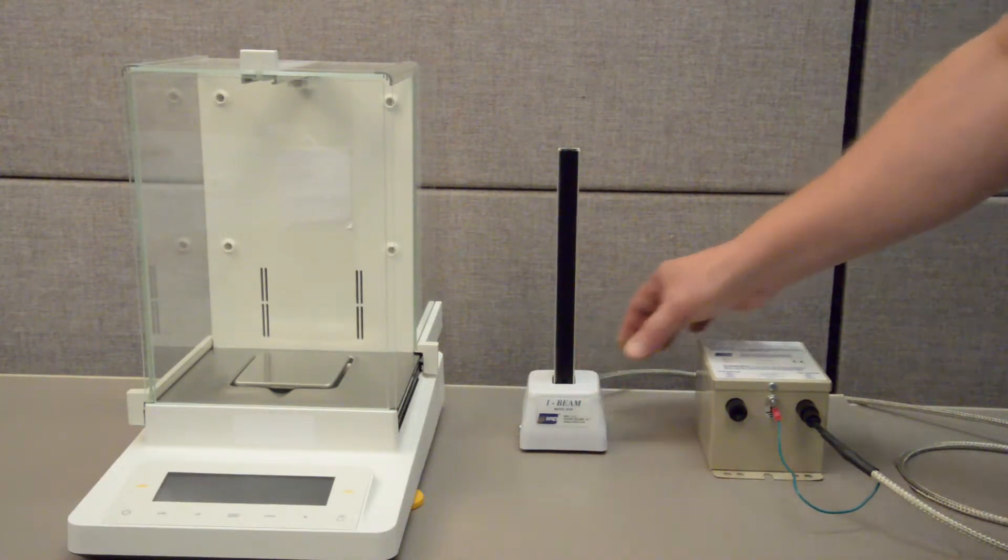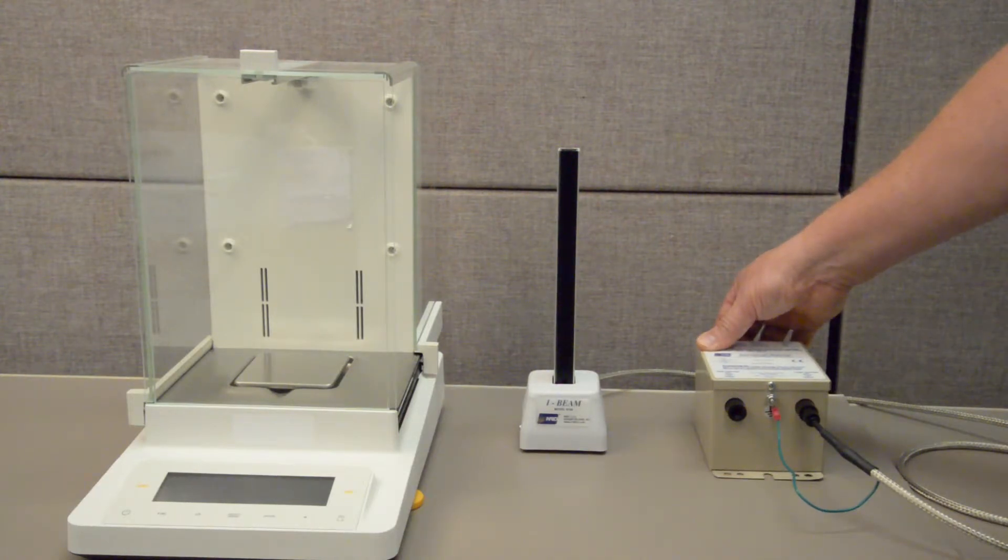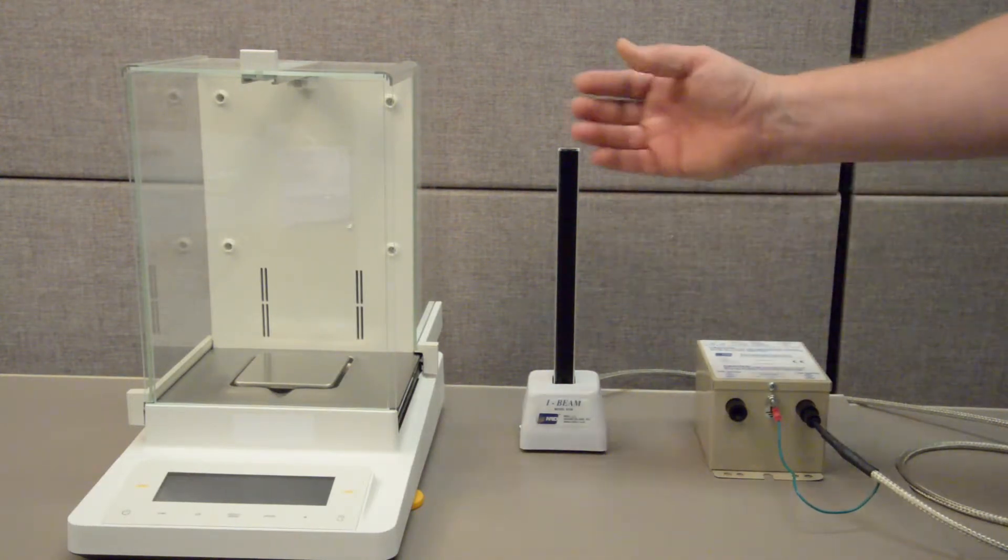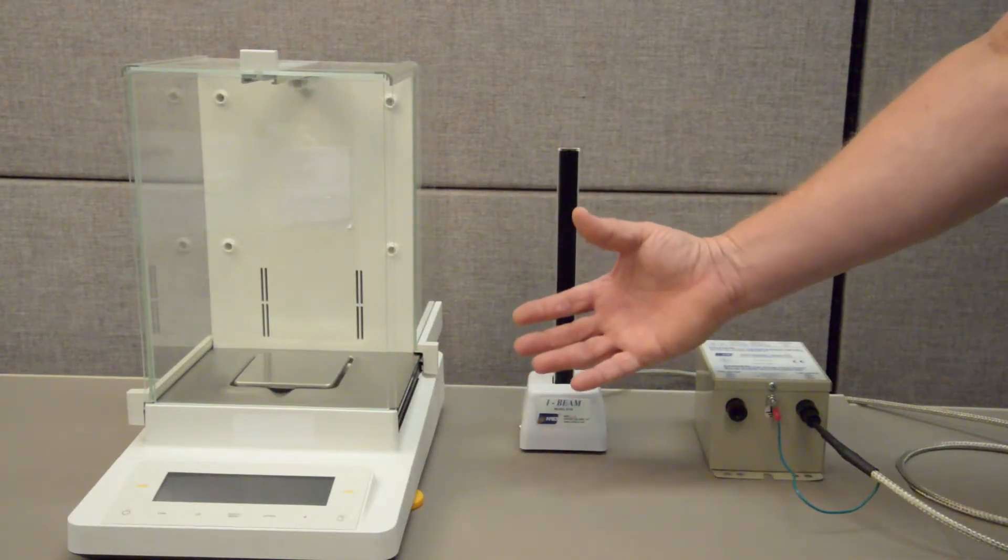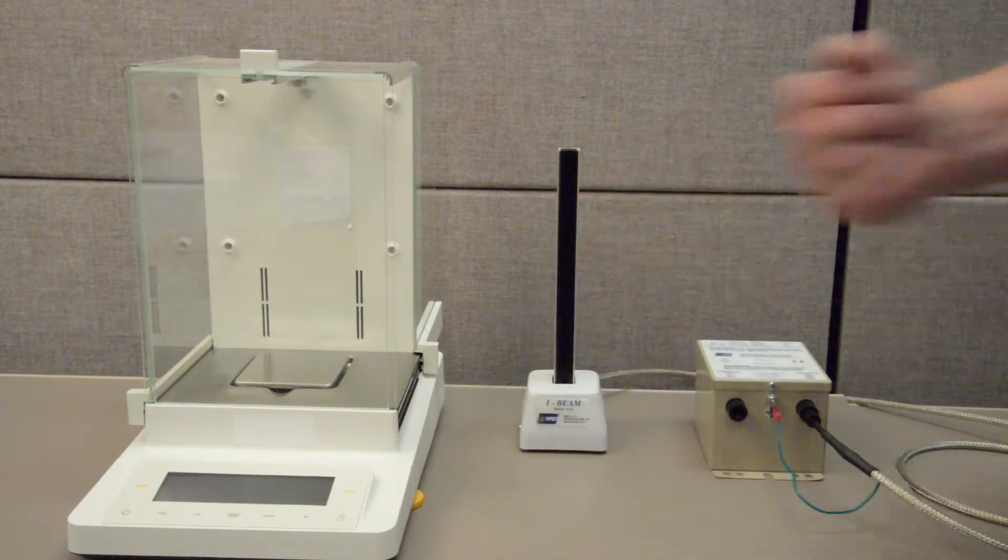To use the I-beam, simply turn on the power supply and the I-beam is ready for use. The I-beam stand ionizer produces a large static eliminating cloud of air ions and is perfect for all types of static removal applications.